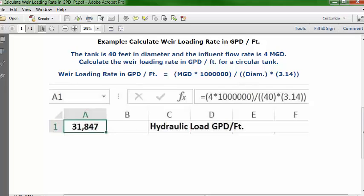you can put your cursor in cell C1 and you can type this description: hydraulic load in GPD per feet. And you can put your cursor in A1 and you can format it as numbers, zero decimals, commas for every 1,000, and then you can set it as bold and centered.